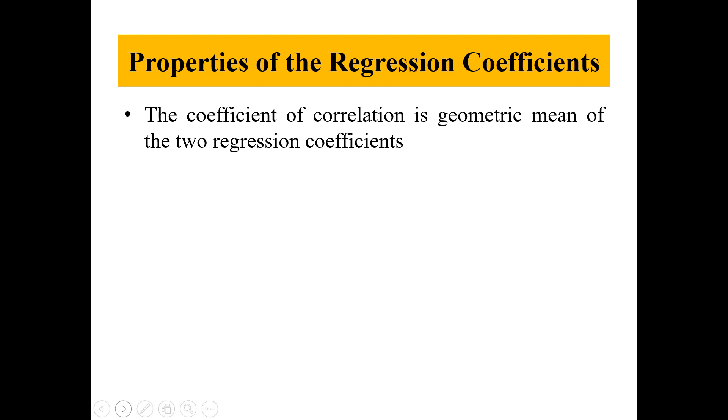The coefficient of correlation is geometric mean of the two regression coefficients, which we can write as: correlation r equals the square root of b y x multiplied by b x y, where b y x is regression of y on x and b x y is regression of x on y.